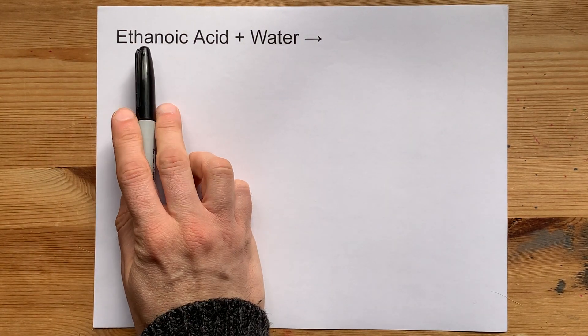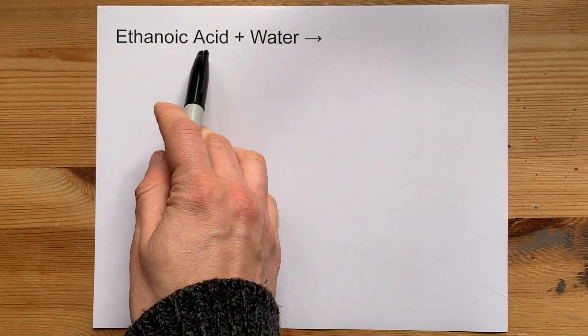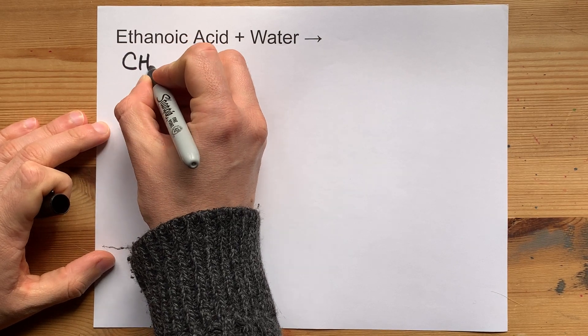I've been asked what happens when you put a little bit of ethanoic acid, which is actually just white vinegar, into water. Ethanoic acid is a weak acid.